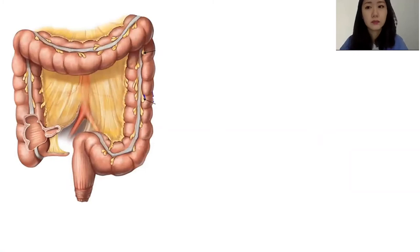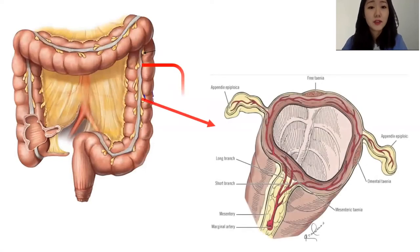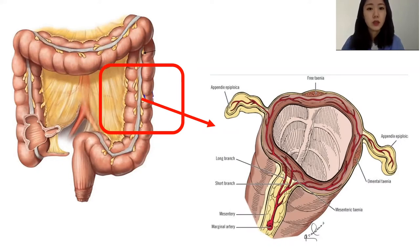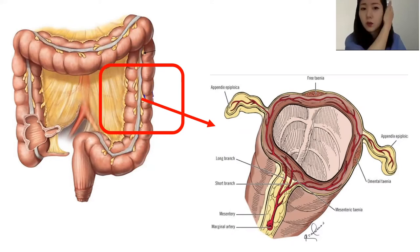How does this happen? These tiny fat pouches contain fat tissue and blood vessels. When there's torsion — twisting of these fat pouches — or a spontaneous thrombosis of venous flow occurs, that causes ischemic infarction or inflammation of these appendages. It usually affects people in their 20s to 50s, and obese people are more likely to be affected because they tend to have larger appendages.